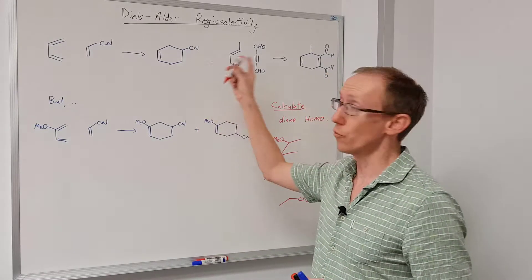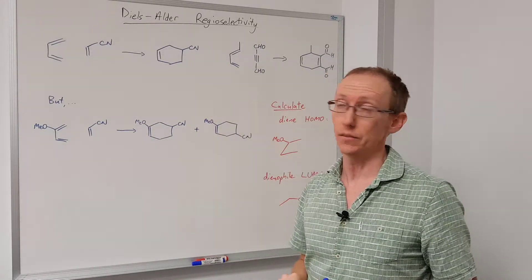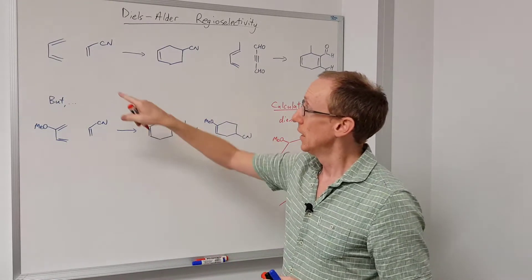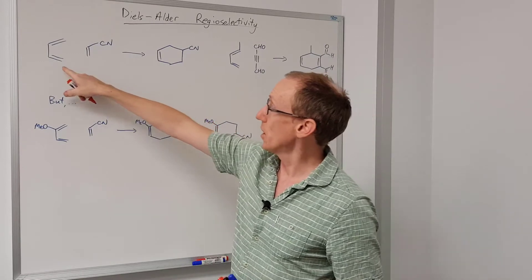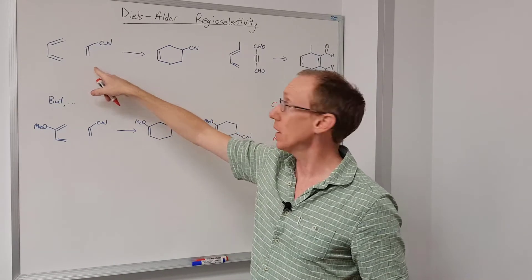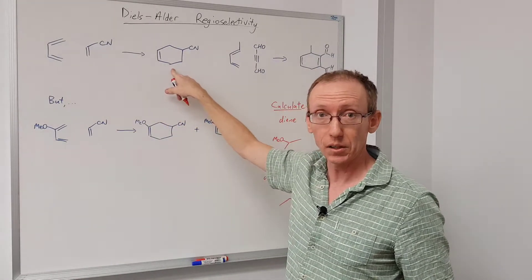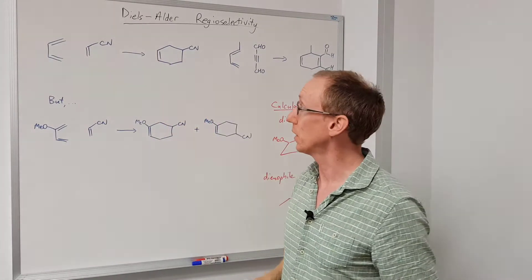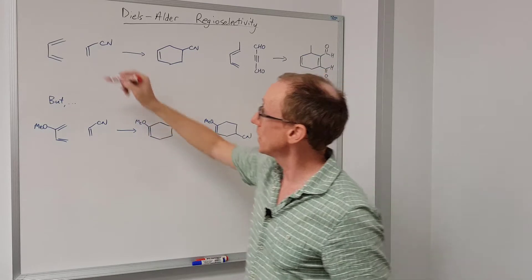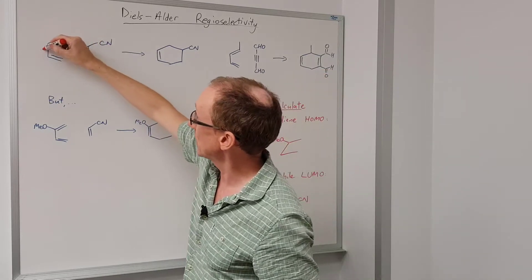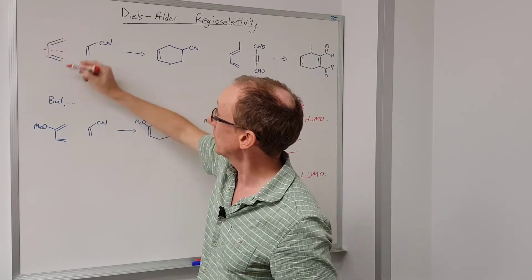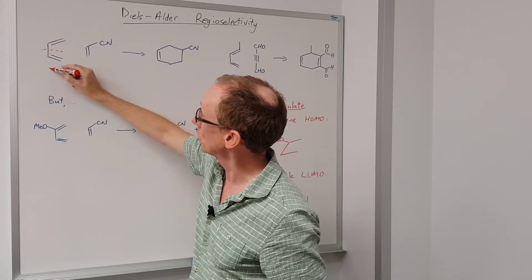This video is about Diels-Alder regioselectivity. If you take this diene and this dienophile, you'll get this product. That's the only possible product you can get, and the reason for that is that the diene is symmetrical.